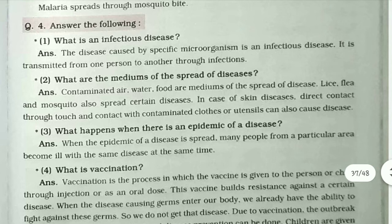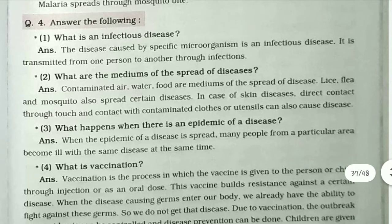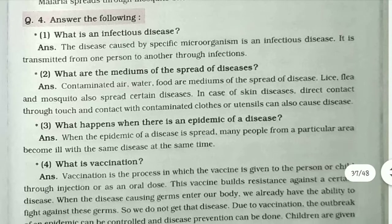What are the mediums of the spread of disease? Contaminated air, water, and food are mediums of the spread of disease. Fleas and mosquitoes also spread certain diseases. In case of skin disease, direct contact through touch and contact with contaminated clothes or utensils can also cause disease.